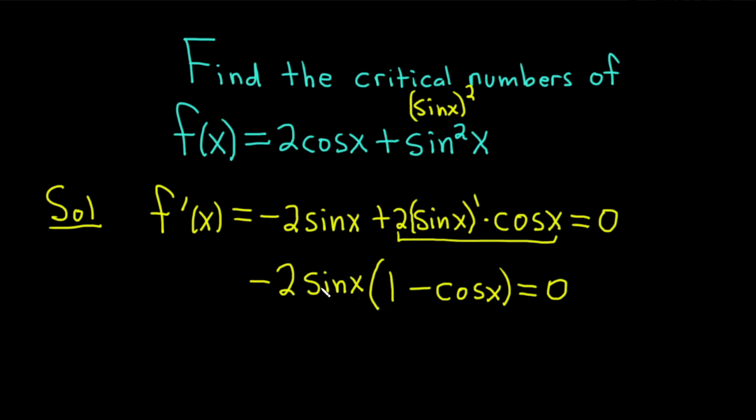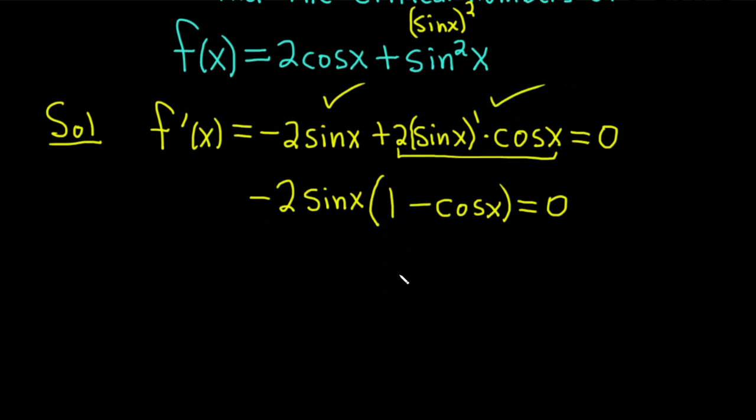Let's check that. Negative 2 sine x times 1 is negative 2 sine x. Negative 2 sine x times negative cosine x is positive 2 sine x cosine x. Boom. We have a product equal to 0, so we can set each factor equal to 0. So this tells us that negative 2 sine x is equal to 0, or 1 minus cosine x is equal to 0.